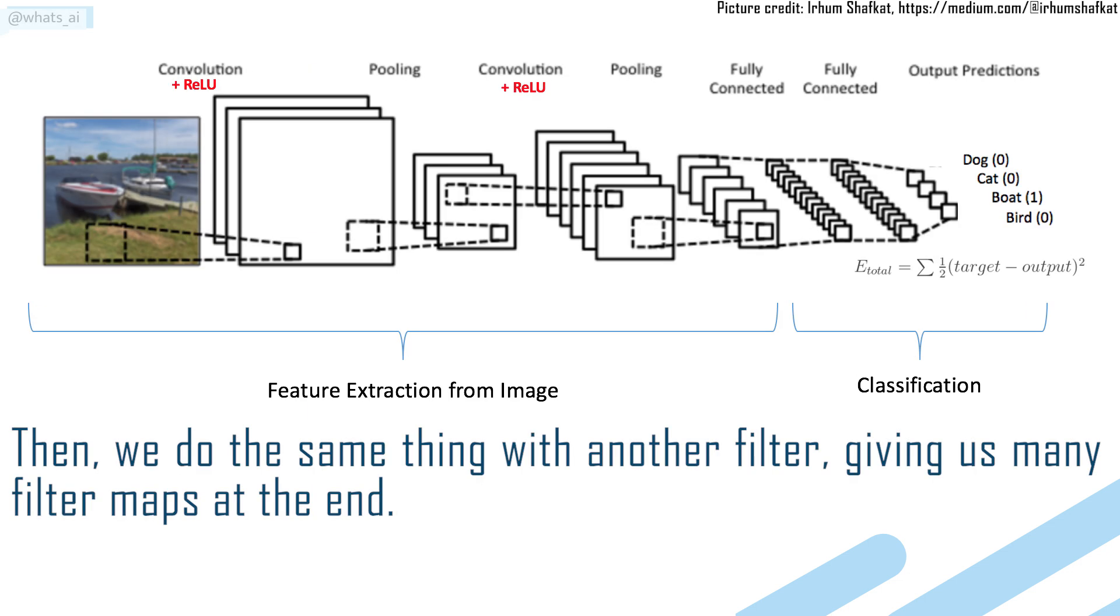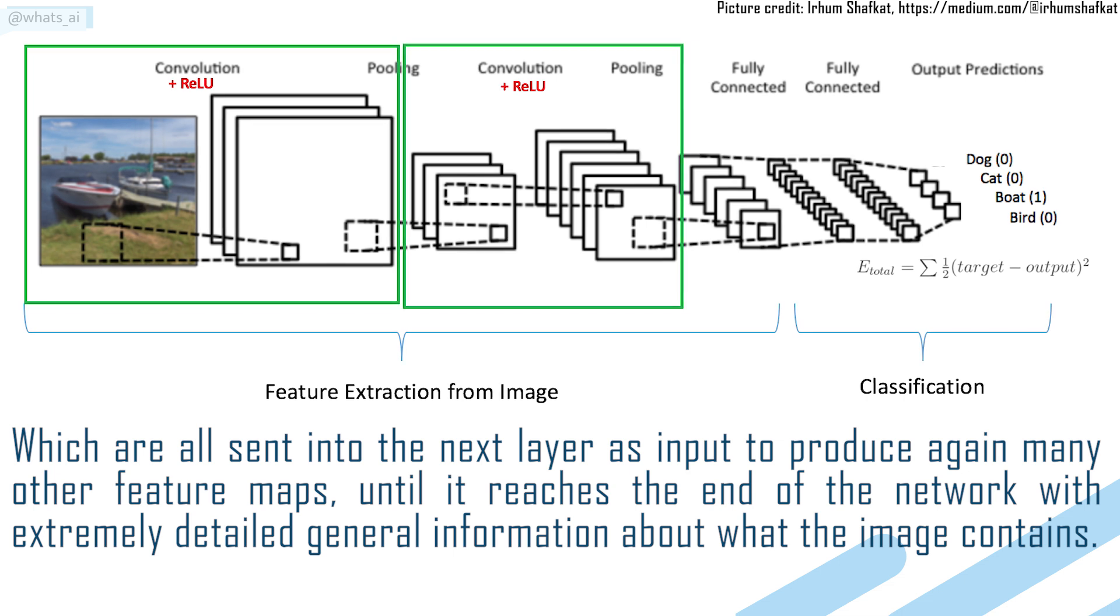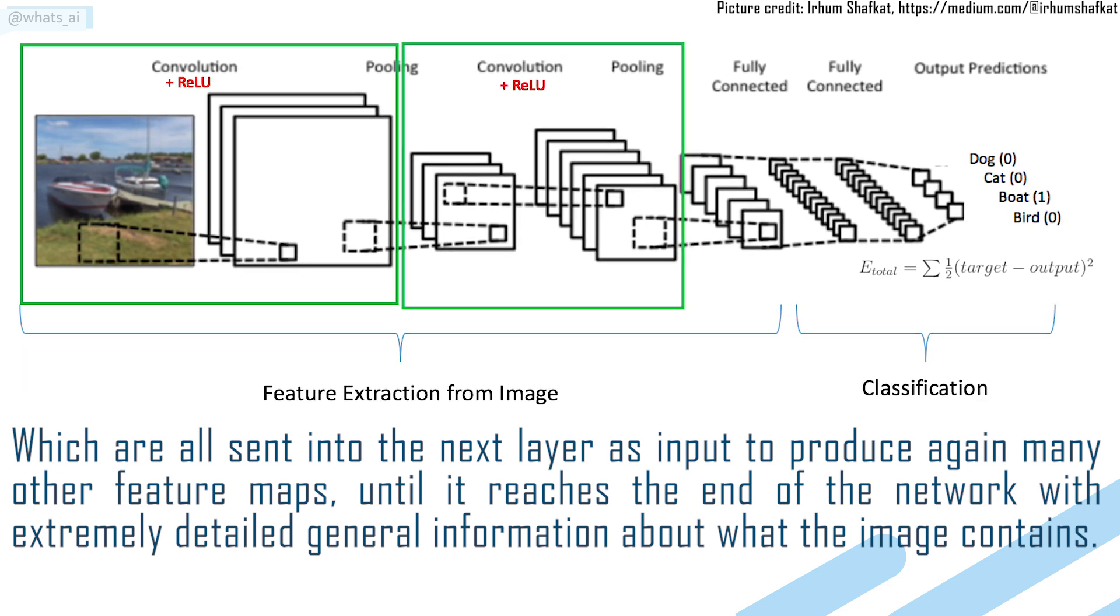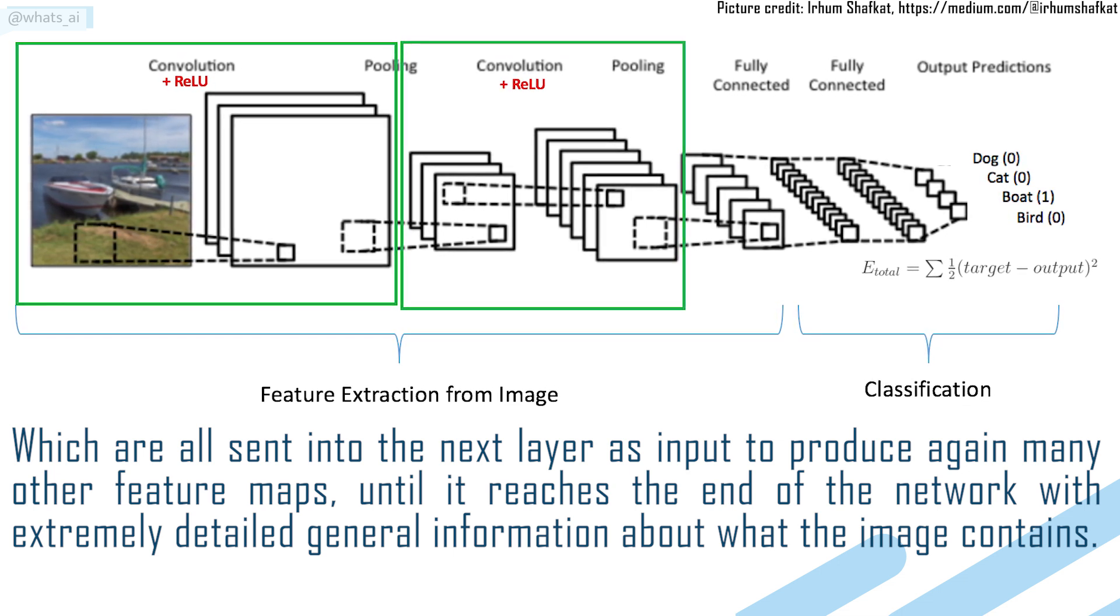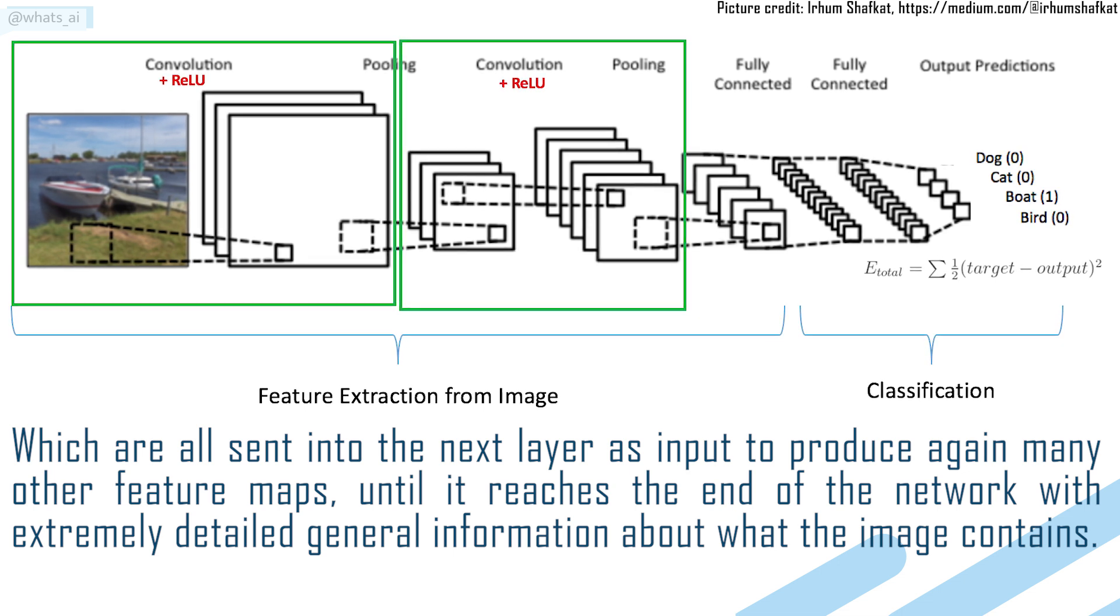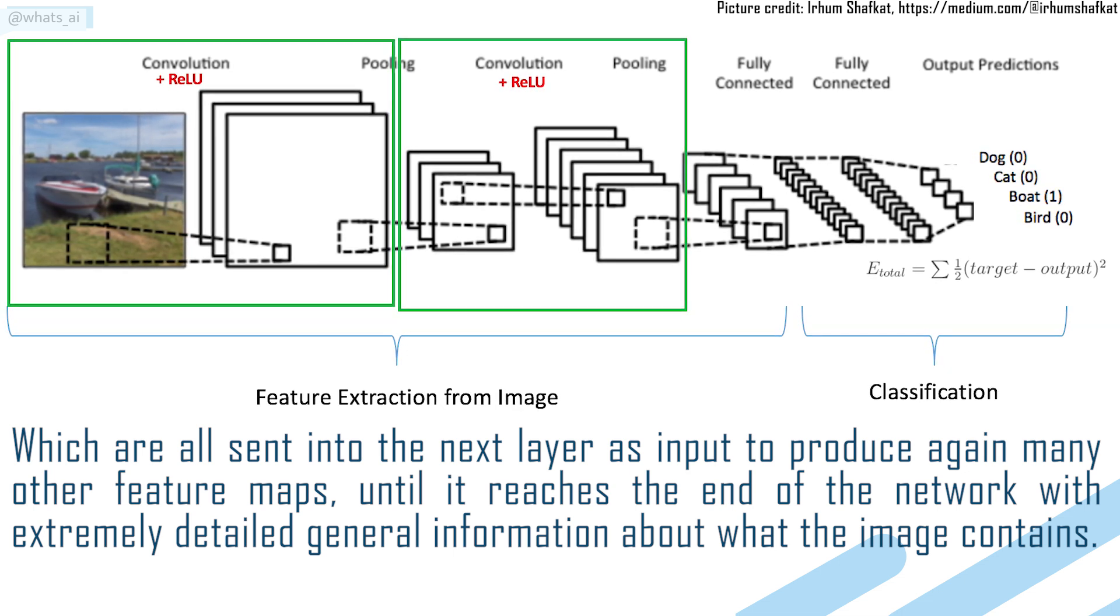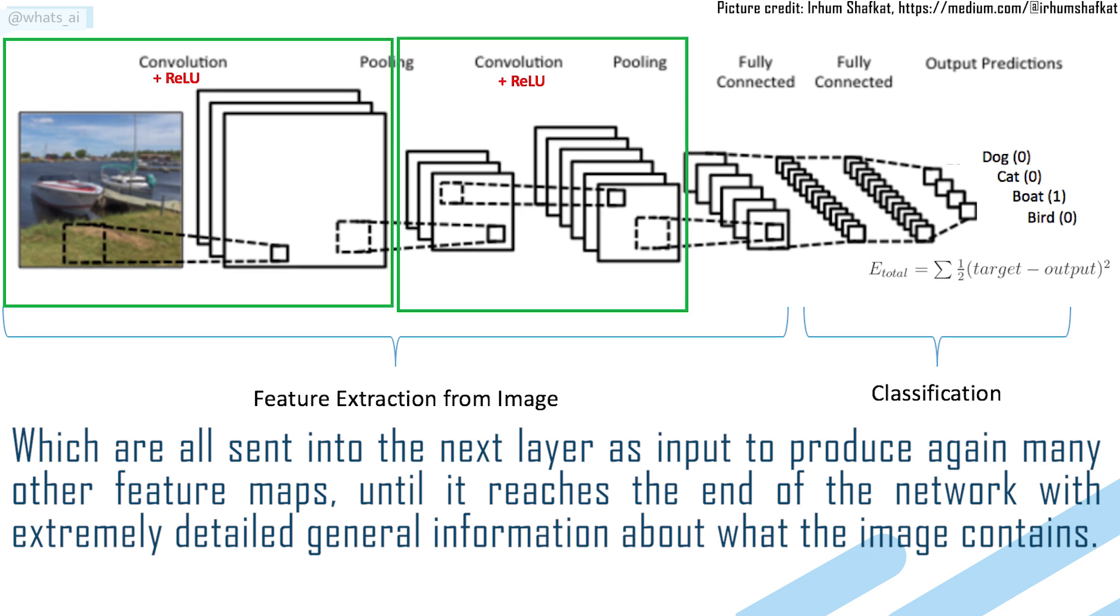Then we do the same thing with another filter, giving us many feature maps at the end, which are all sent into the next layer as input to produce again many other feature maps, until it reaches the end of the network with extremely detailed general information about what the image contains.